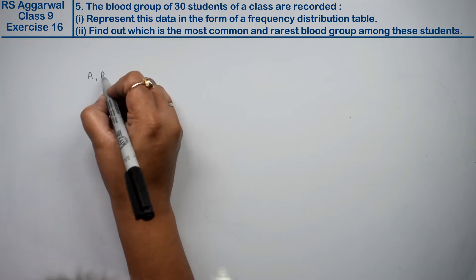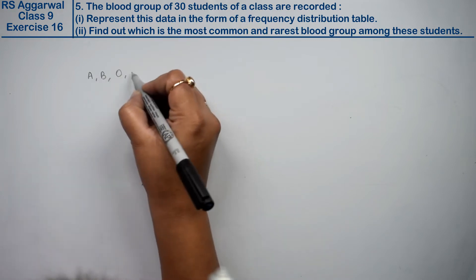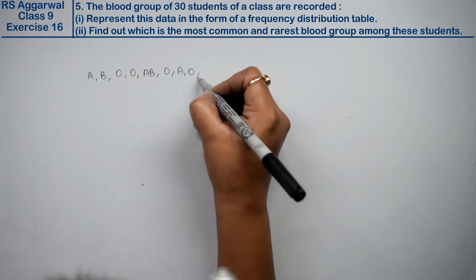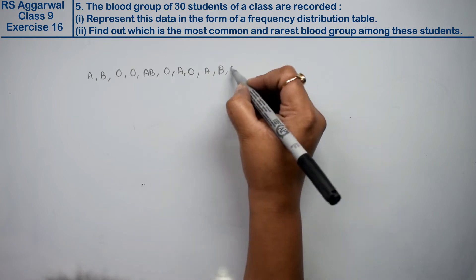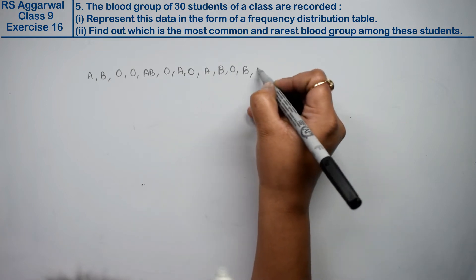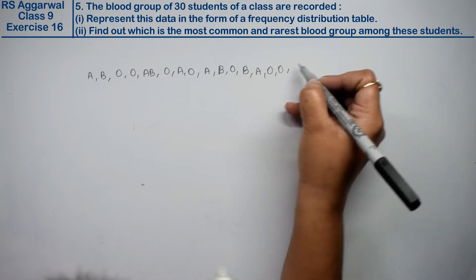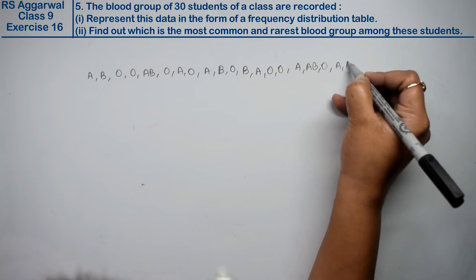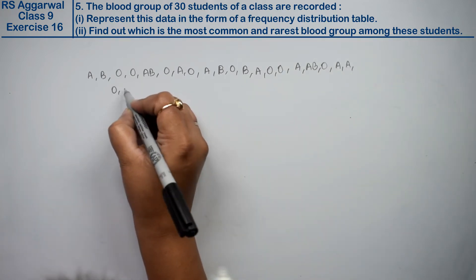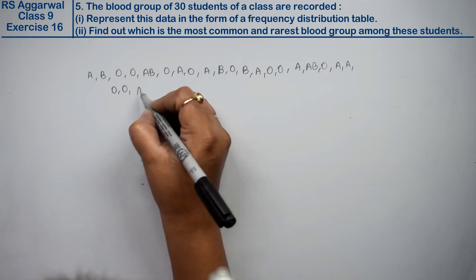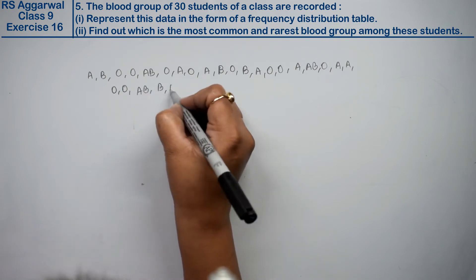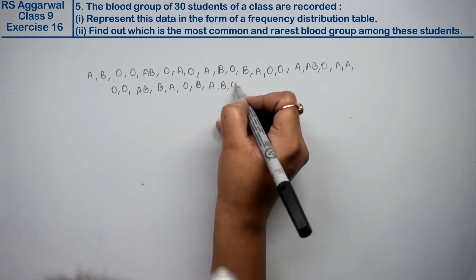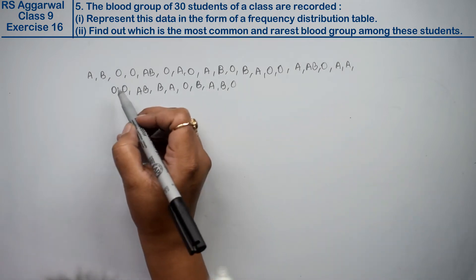A, B, O, O, AB, O, A, O, A, B, O, B, A, O, O, A, B, A, O, O, A, AB, O, A, O, A, AB, O, B, A, O, B, A, B, O. Friends, here are 30 students blood groups record.